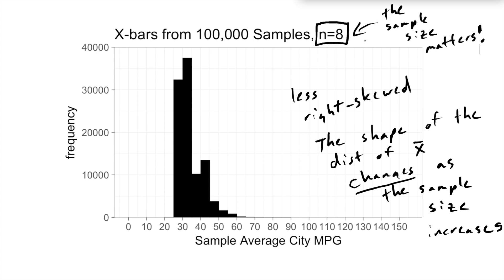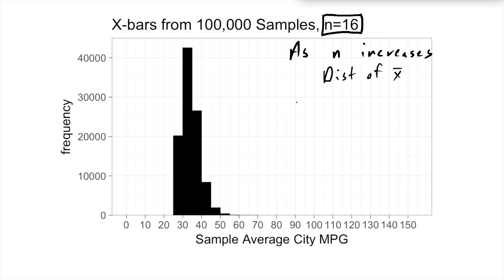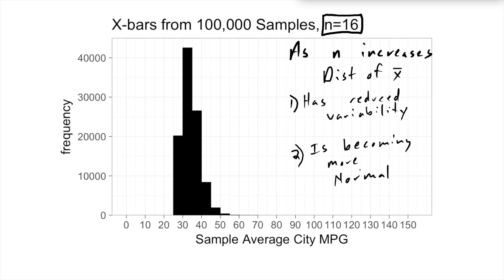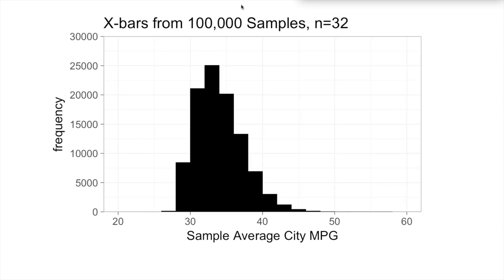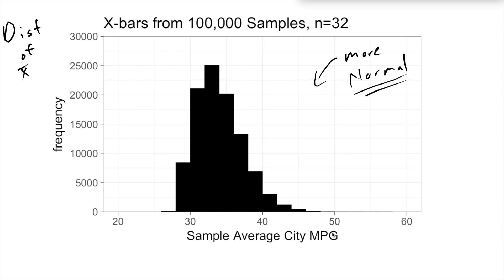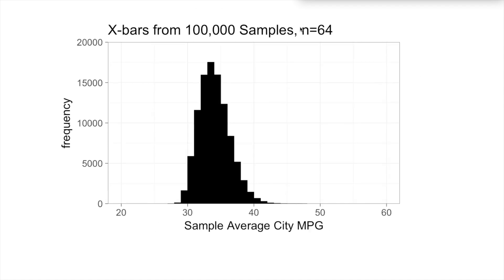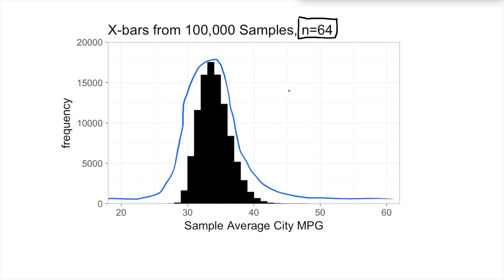Let's double our sample size again to 16. Two really important things: as our sample size increases, the distribution of x-bar is becoming less variable and the shape is becoming more normal. The right skewness we saw before is a lot less pronounced here. Here's 100,000 samples of size 32 — it's still a little bit skewed, but less so. This last picture is samples of size 64: 100,000 x-bars each from a sample of size 64. Look at how normal this looks — there's a slight amount of right skewness, but it basically looks like a bell shape. It's much more normal.